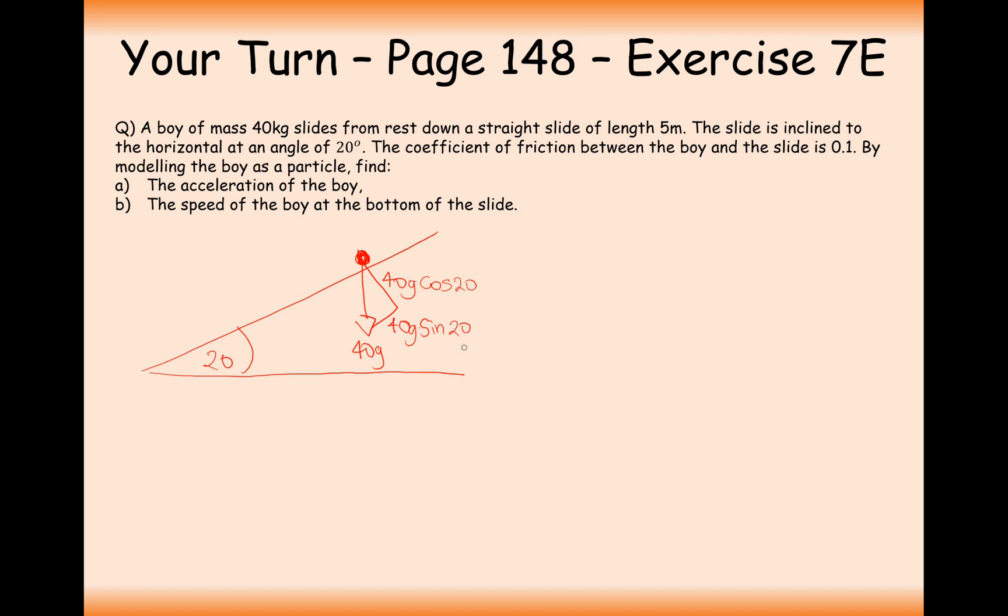Hopefully you're now at a stage where you can just quickly add in these resolving forces, based on the fact that this side here is always the cos one, this side here is always the sin one. We know that the coefficient of friction between the plane and the boy is 0.1, so a pretty slippery surface for that slider. And we know that it's 5 meters down to the bottom. Now that's probably going to indicate we're going to do SUVAT with this afterwards. By modeling the boy as a particle, find the acceleration of the boy. So first things first, we need to work out the friction value that will be going up the slope. Why will it be going up the slope? Because the boy is sliding down the slope, and friction is always acting in the opposite direction to motion.